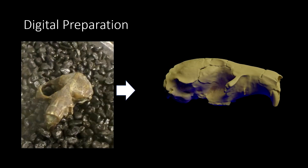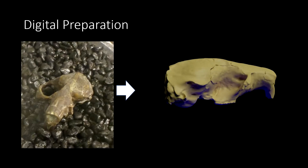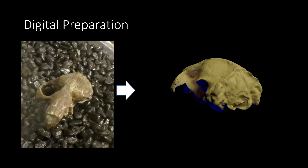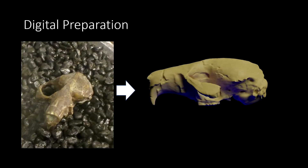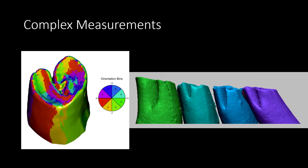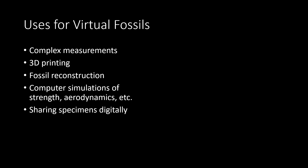Digital Preparation is the process of taking scans of physical specimens and converting them into 3D digital models. There are many different uses for virtual fossils, such as taking complex measurements, 3D printing, fossil reconstruction, computer simulations, and sharing specimens digitally.